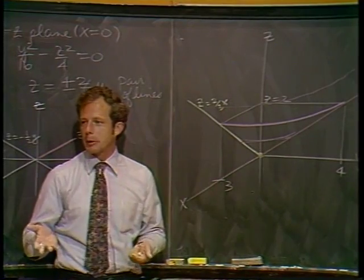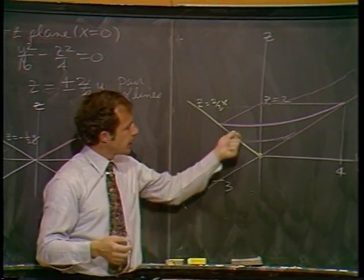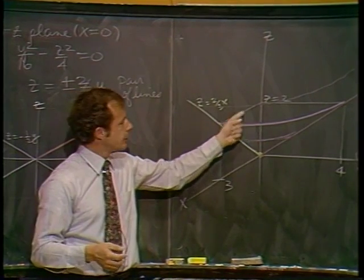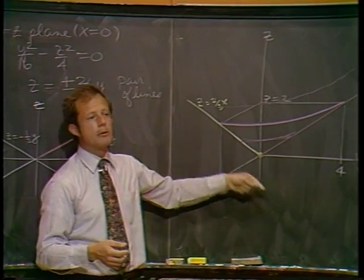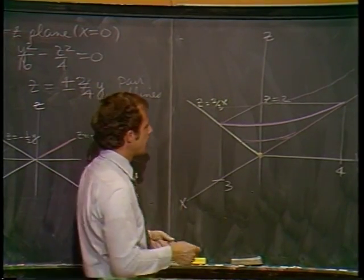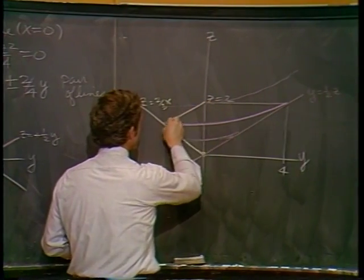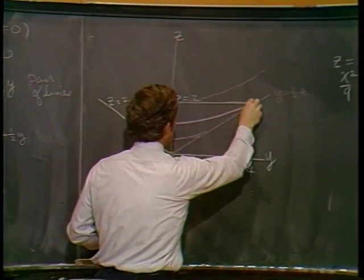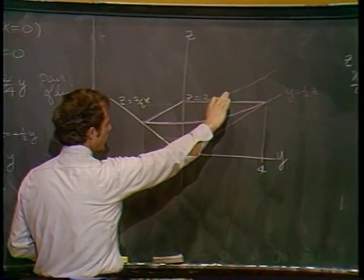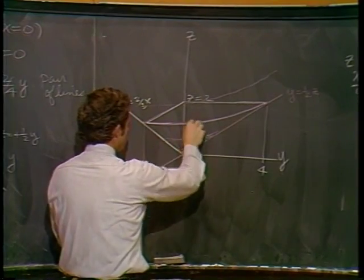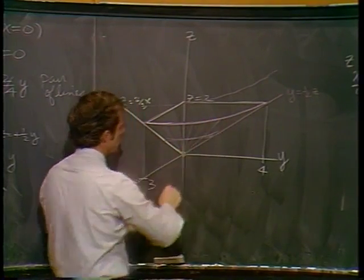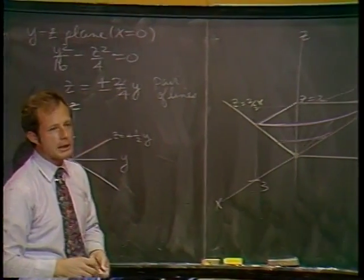And off in this direction, you get Z equals minus 1/2 Y. Let's kind of put that on hold for a second, see if we really need it. The other plane, the XZ plane, in the first octant would involve only Z equals 2/3 X. That extends down below as well, and there's a corresponding second line out of our region as well.